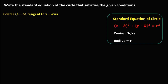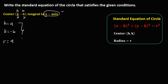For this given, the center is 4 and negative 6, so h is equal to 4 and k is negative 6. Since the circle is tangent to the x-axis, the radius r is equal to 4. Now write the standard equation of the circle using this formula.